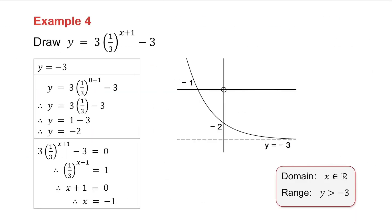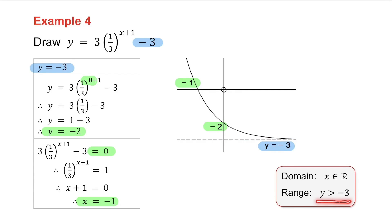With the exponential, the asymptote comes from the constant term, so the asymptote is y equals minus 3. To find the y-intercept, make x equal to 0, giving y equals minus 2. To find the x-intercept, make y equal to 0, giving x equals minus 1. The intercepts are minus 2 and minus 1. The domain is x an element of R, and since the graph lies entirely above the asymptote, the range is y greater than minus 3.